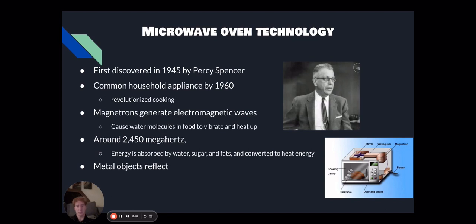Microwaves use magnetrons to generate electromagnetic waves. These cause water molecules in food to vibrate and heat up. Microwaves operate around 2,450 megahertz, and this energy is absorbed by water, sugar, and fats and converted into heat energy.